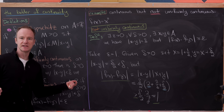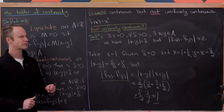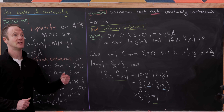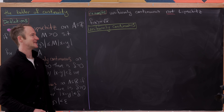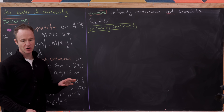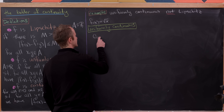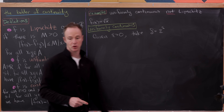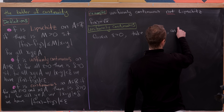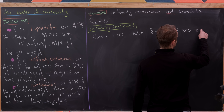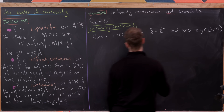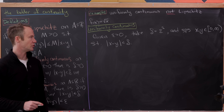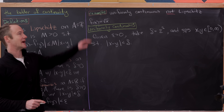So f(x) = x² is continuous but not uniformly continuous. Now let's prove the other converse is also false: we can find a uniformly continuous function that is not Lipschitz. For our example, we'll take f(x) = √x. Let's start by proving it is uniformly continuous on [0, ∞). Given epsilon greater than zero, let's take delta equal to epsilon squared, and suppose x, y are in [0, ∞) with the absolute value of x minus y less than delta.